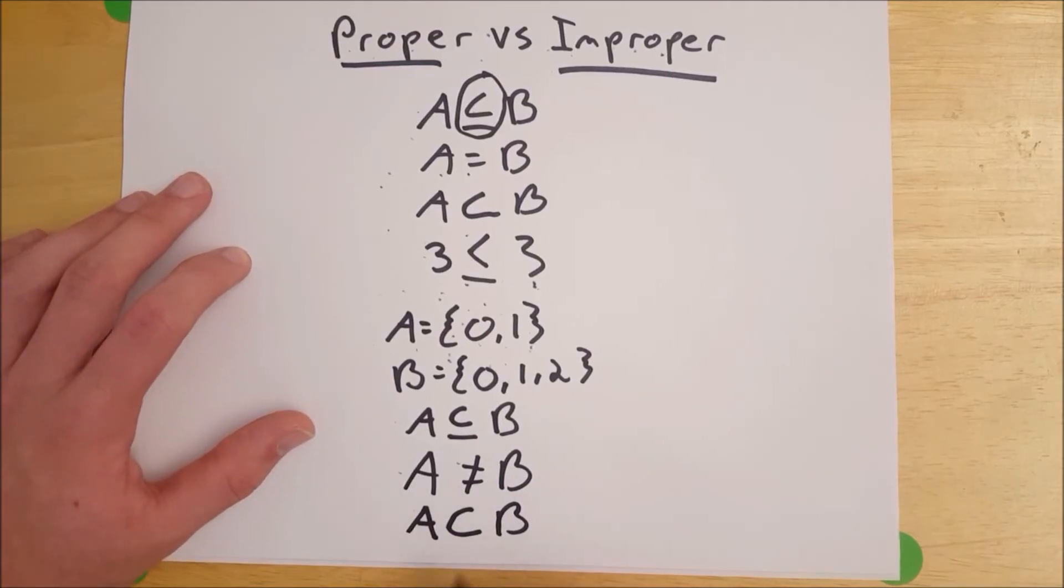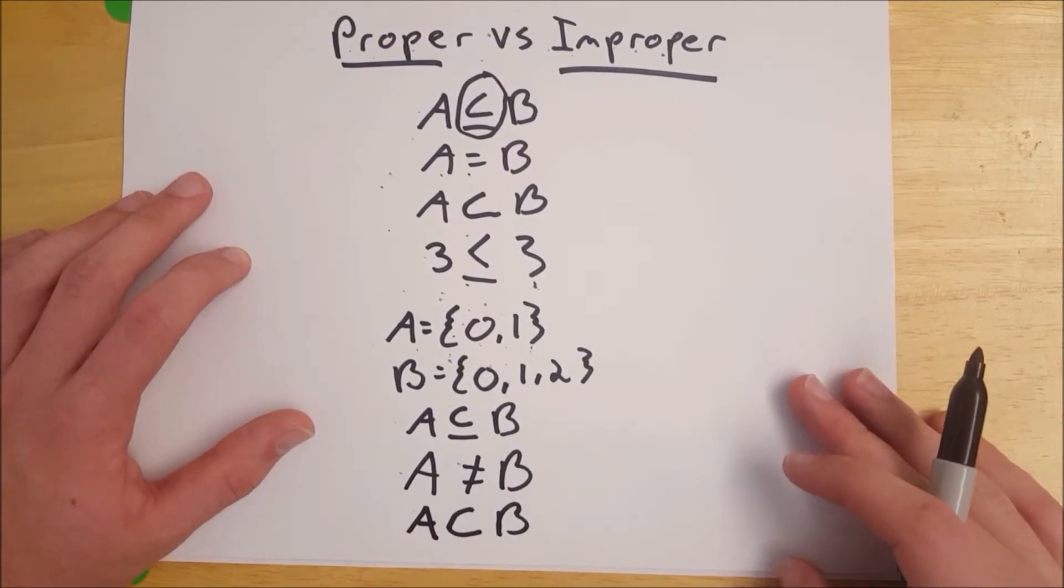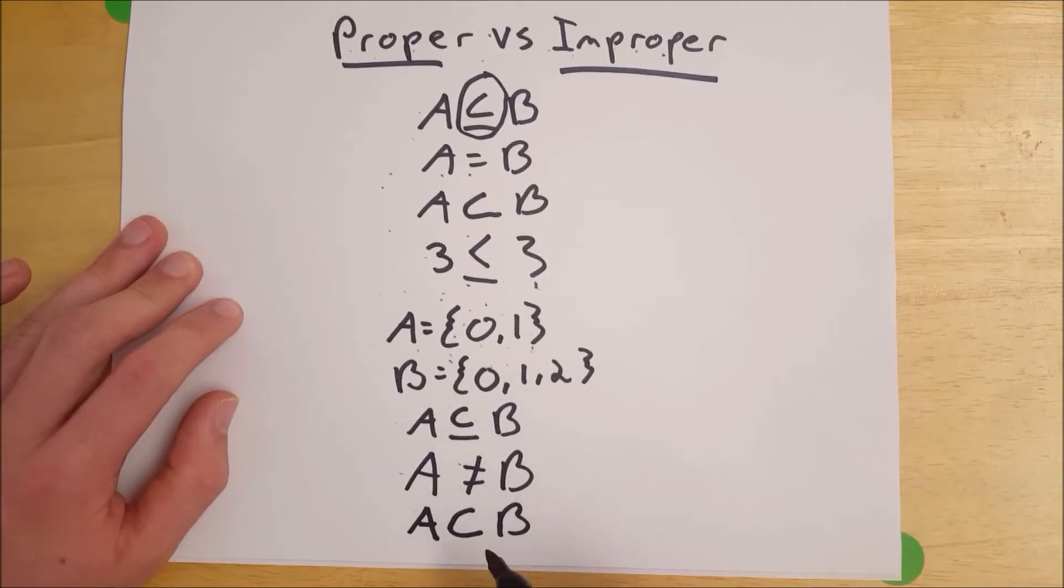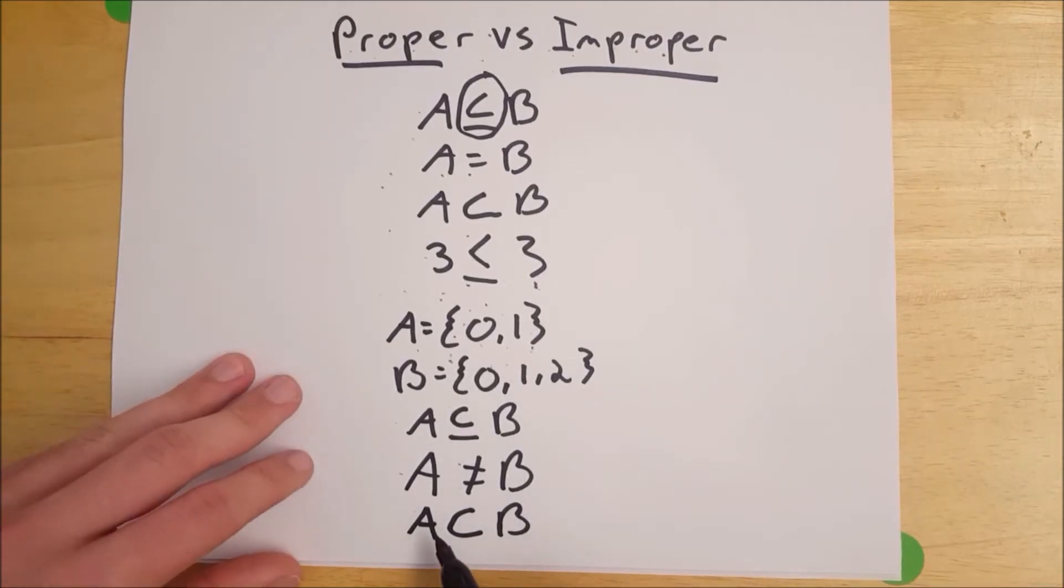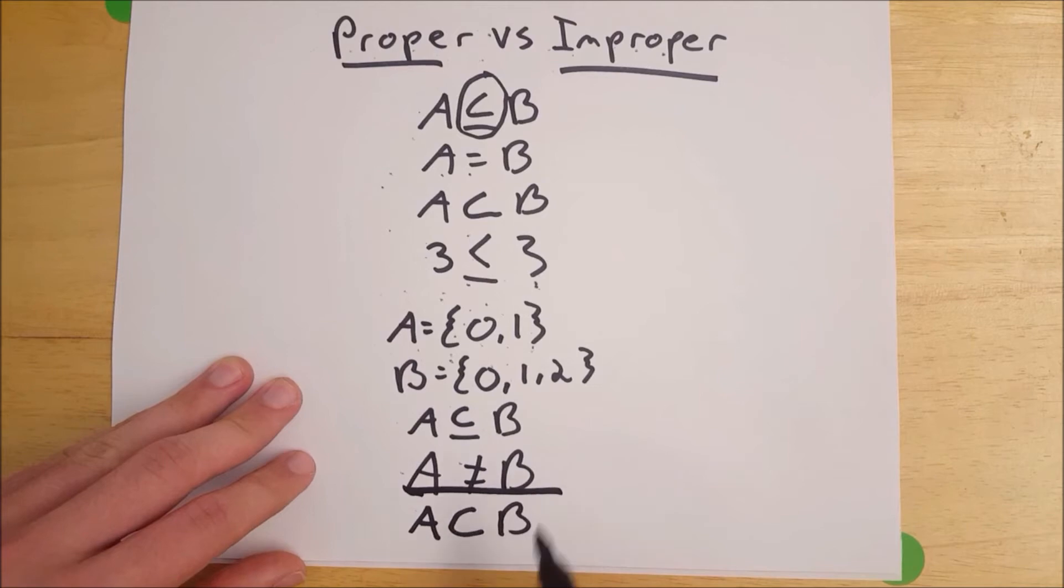So what we could also say is that A is a proper subset of B. And again, that's what that symbol there means, just kind of looks like a C. A is a proper subset of B. So when you use that sign, you know that A is not equal to B.